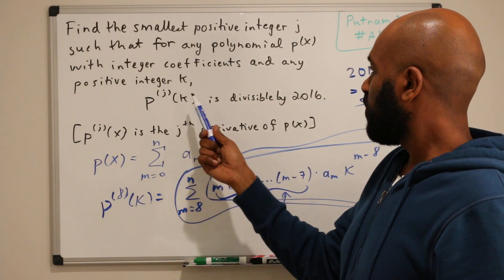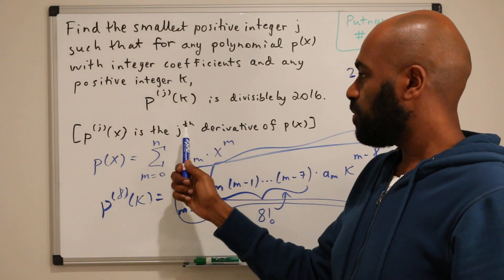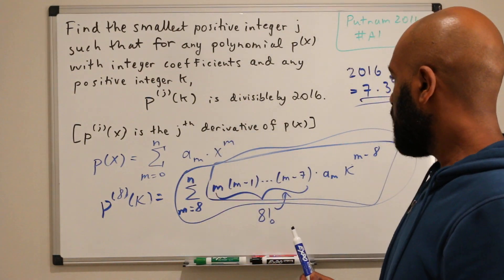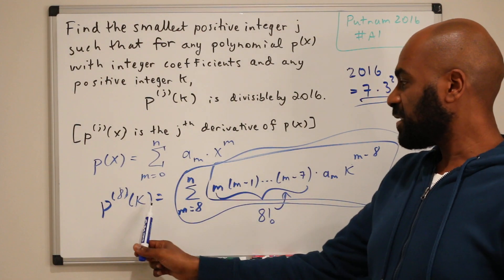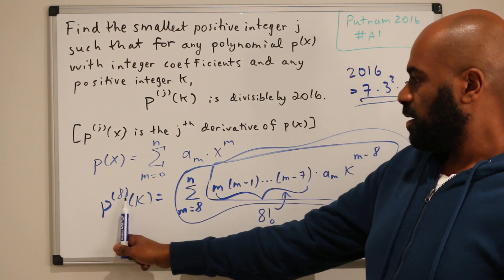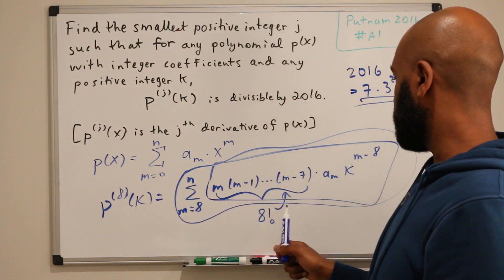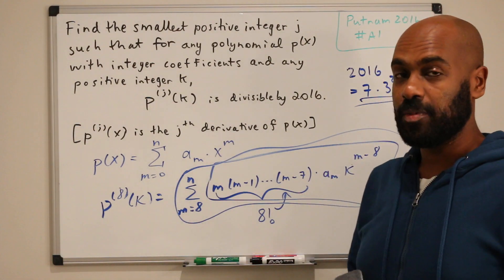So overall, it looks like we're forced to have j be at least 8 from earlier by looking at x to the j. And now, when j is 8, the jth derivative of any polynomial evaluated at any integer is going to be divisible by 8 factorial, and hence divisible by 2016.